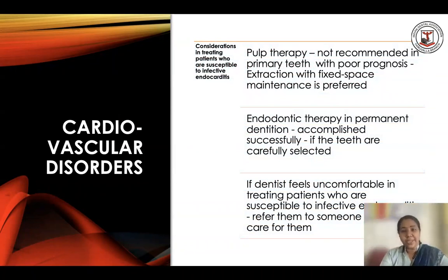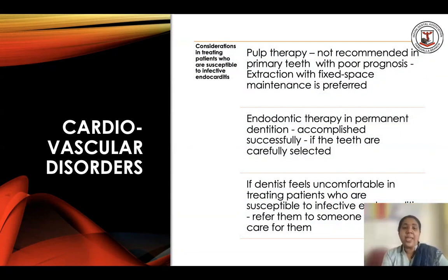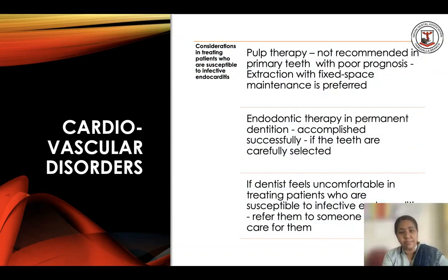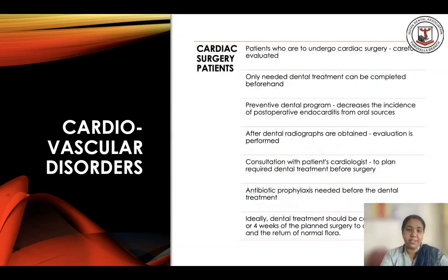When looking at therapies recommended for children with cardiac disorders, always try to do the most definitive treatment. If there is a primary tooth with a poor prognosis, it is better not to do a pulp therapy but to do an extraction. For the permanent dentition, the selection of treatment is again of utmost importance. If at any point you feel uncomfortable treating a patient with multiple cardiac issues, always involve a team if possible.